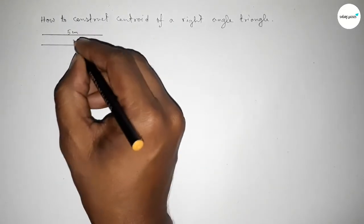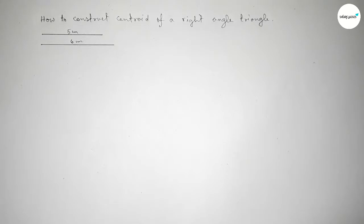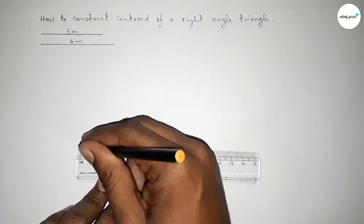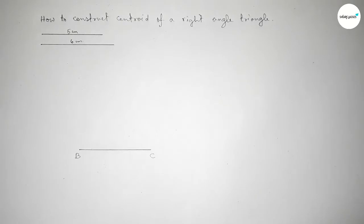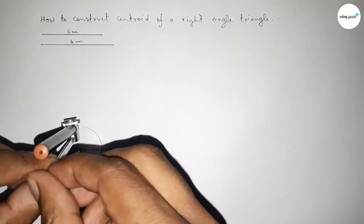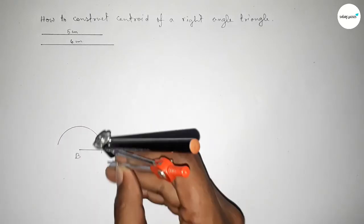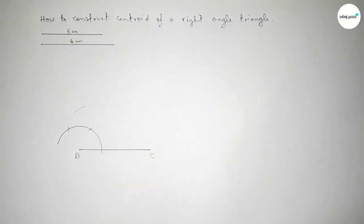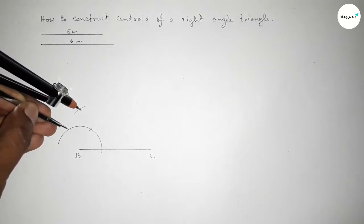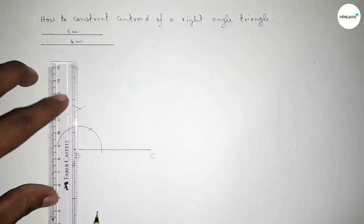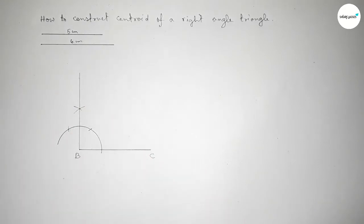So this line is five centimeters and this line is six centimeters. Now we have to draw a line of length six centimeters, taking point B here and point C here. Now we have to draw a 90 degree angle at point B — putting the compass here, taking any length, and drawing an arc. With the same length, putting the compass and cutting arcs, then drawing the curve to intersect at a point.